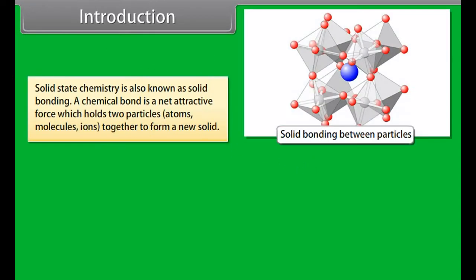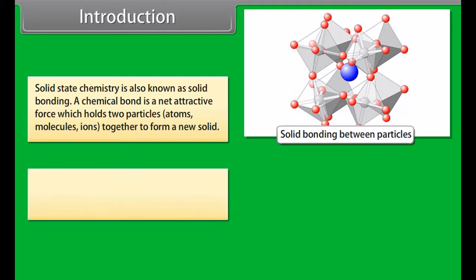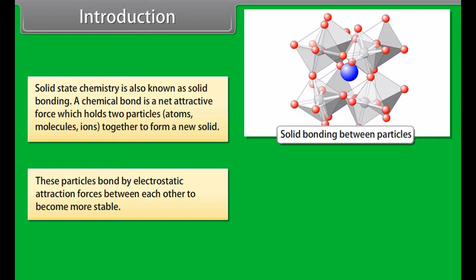Solid state chemistry is also known as solid bonding. A chemical bond is a net attractive force which holds two particles - atoms, molecules, ions - together to form a new solid. These particles bond by electrostatic attraction forces between each other to become more stable.